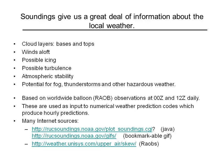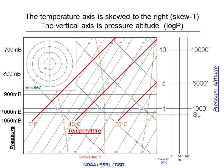These soundings give us a great deal of information about the local weather where the sounding is, or is forecast to be. In particular, it will tell us about cloud layers — the bases and tops — winds aloft, possible icing, possible turbulence, the stability of the atmosphere, potential for fog, thunderstorms, and other hazardous weather. The data is based on worldwide balloon raob observations input to numerical codes which then produce hourly predictions.